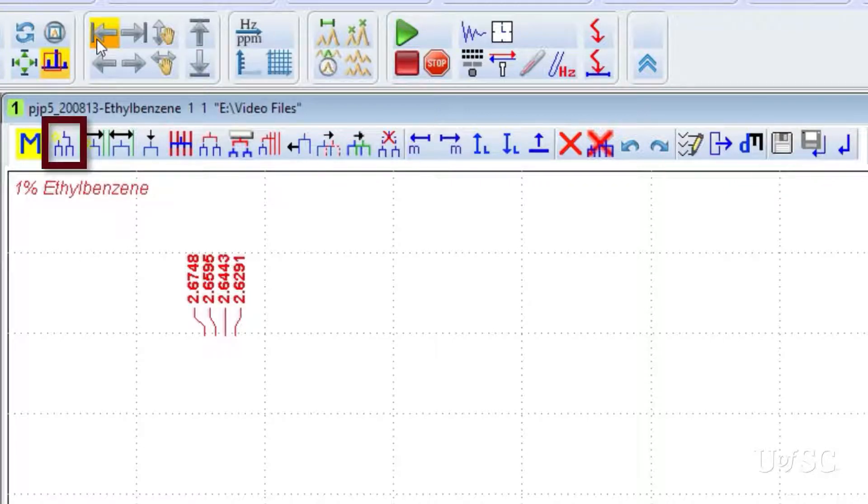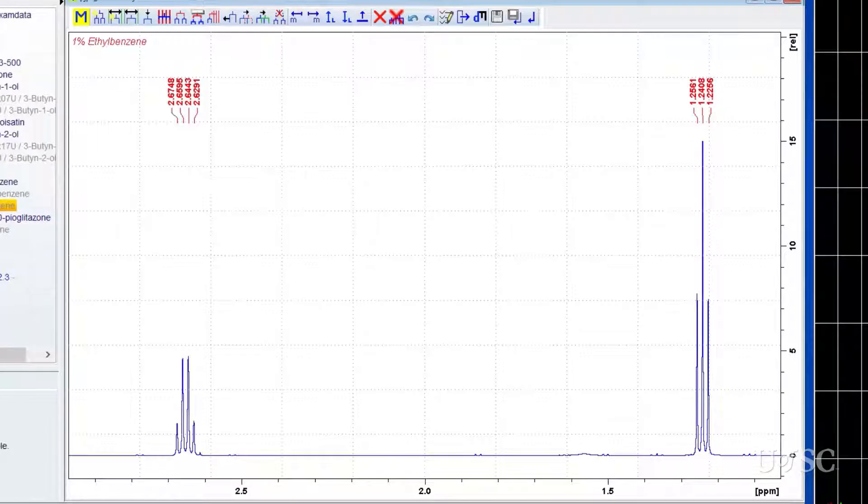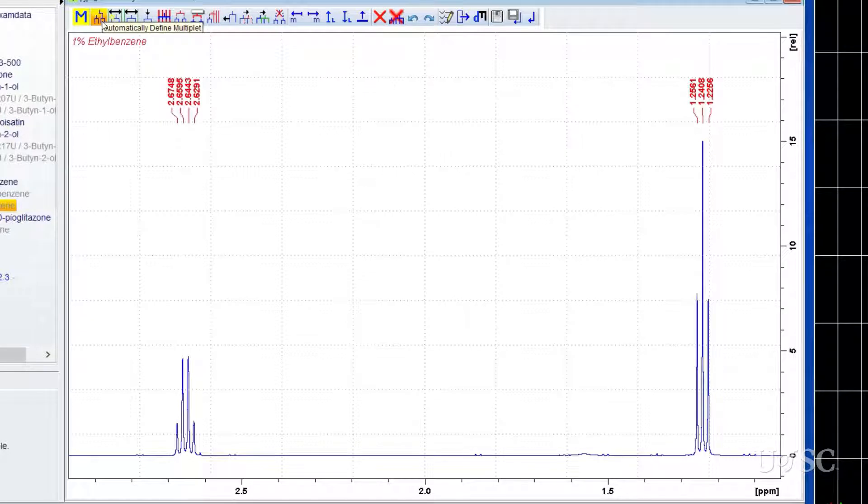Fully automatic definition of the multiplets can be performed by clicking on the first button. Note that only the expanded region shown in the window will be processed by the multiplet analysis tool. The result is the formation of brackets or trees at each of the detected multiplets.